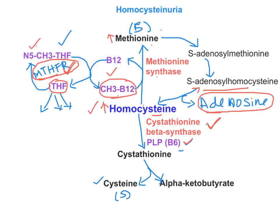That is all about homocystinuria. The metabolism of methionine and homocysteine and different enzyme deficiencies have been covered. In the question, the best choice available is pyridoxine, and the next best choices are cobalamin (vitamin B12) and folate. Pyridoxine is the drug of choice for homocystinuria patients. Thanks for watching — if you liked the video please give a thumbs up, and consider subscribing for regular updates. See you again in another video — till then, take care.